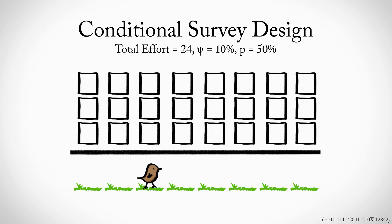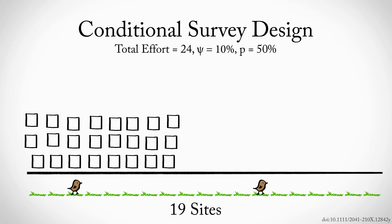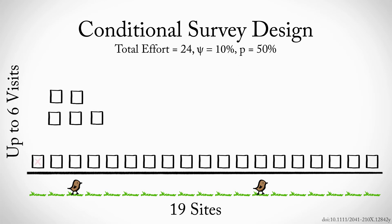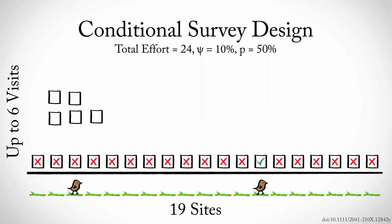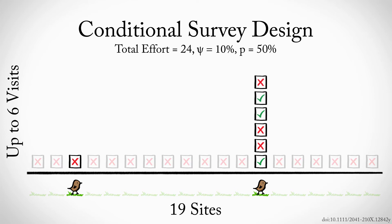Alternatively, the conditional design approach to studying the Little Brown Bird recognizes that for rare species, it's more important to spend effort on sites where we know the species is present. So we would use our 24 surveys to visit 19 sites just once, and then conduct an additional five surveys at the sites where we encountered a Little Brown Bird on the first survey — only one in this case. For the same amount of total effort, we would end up conducting more surveys at sites that are occupied — seven to be precise.